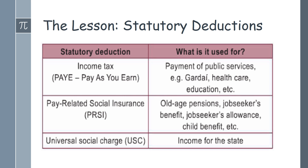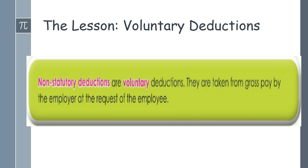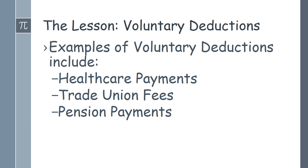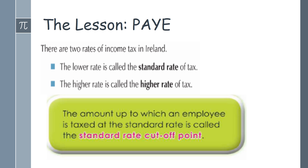We then give some examples of statutory deductions — what they are, what they mean, and what they're used for. There's plenty of scope for getting the class involved here, using the key skills: students are communicating, working with others in pairs and groups, and managing information. Similarly, for voluntary or non-statutory deductions, you can get students to brainstorm examples of what a voluntary deduction could be. The key thing is that you're challenging students to draw on information they already know — we as teachers are not feeding it to them the whole time; the students themselves are building on their prior knowledge.